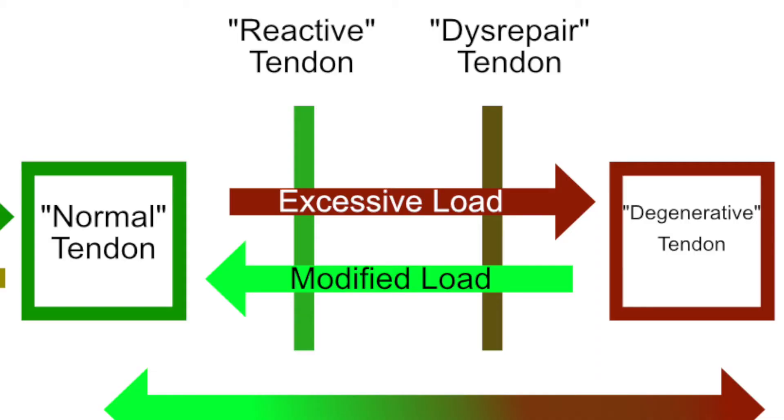In either of these stages — whether unloaded or overloaded — we can return to the normal healthy state of a tendon. Whether that means we need to add exercise and load, or we need to decrease the intensity and frequency to decrease the overall load on that tendon to get it to calm down.